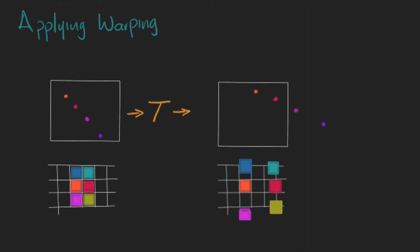First, the new location might not fall in an exact pixel. Second, if the warping is making the image larger, we will end up with holes in the image.